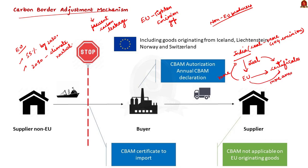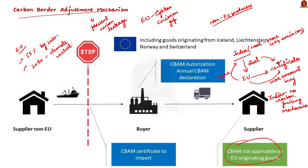In contrast, if the Indian steel company can prove that they have already paid a price in India for the carbon emitted in the production of steel, then the corresponding cost for the European Union importer to purchase carbon certificates can be fully deducted. This encourages imports from India. The problem is that India does not have such a fully developed carbon pricing mechanism. Because of all these reasons, developing countries like Brazil, India, South Africa, and China are opposing the Carbon Border Adjustment Mechanism of the EU.